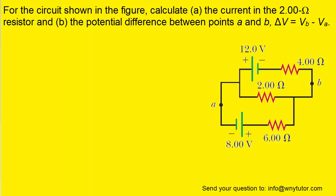Our first step to solving this question is to draw in the currents in each loop of the circuit. You'll notice that we have two loops: the upper loop and the lower loop, so we'll have to draw in some currents, including a current for this middle section. The currents are labeled with the letter I and a subscript. For example, I4 represents the current flowing through the 4-ohm resistor, I2 is the current through the 2-ohm resistor, and I6 is the current through the 6-ohm resistor.